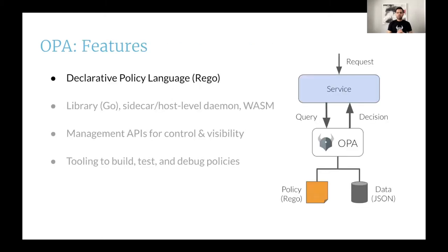Now let's look at some of OPA's features. At the core of OPA is a high-level declarative language called Rego. With Rego, you can write policy decisions that are more than Boolean — allow, deny, true, false. Your policy decisions can be arrays, objects, or a collection of values.